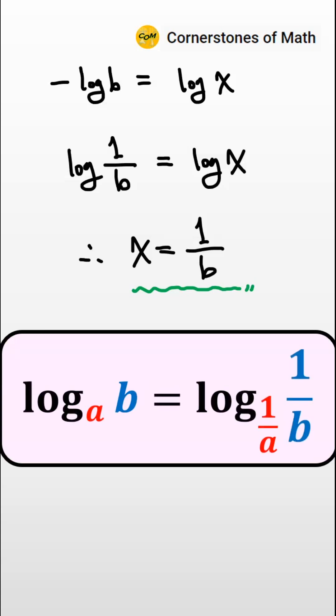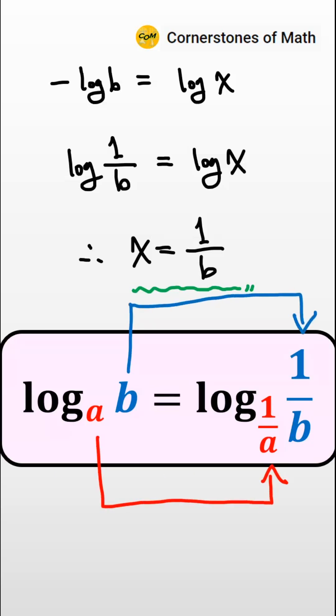This means that log base A of B equals log base 1 over A of 1 over B. That is, if we take the reciprocal of the base, then the number B also must be replaced with its reciprocal value.